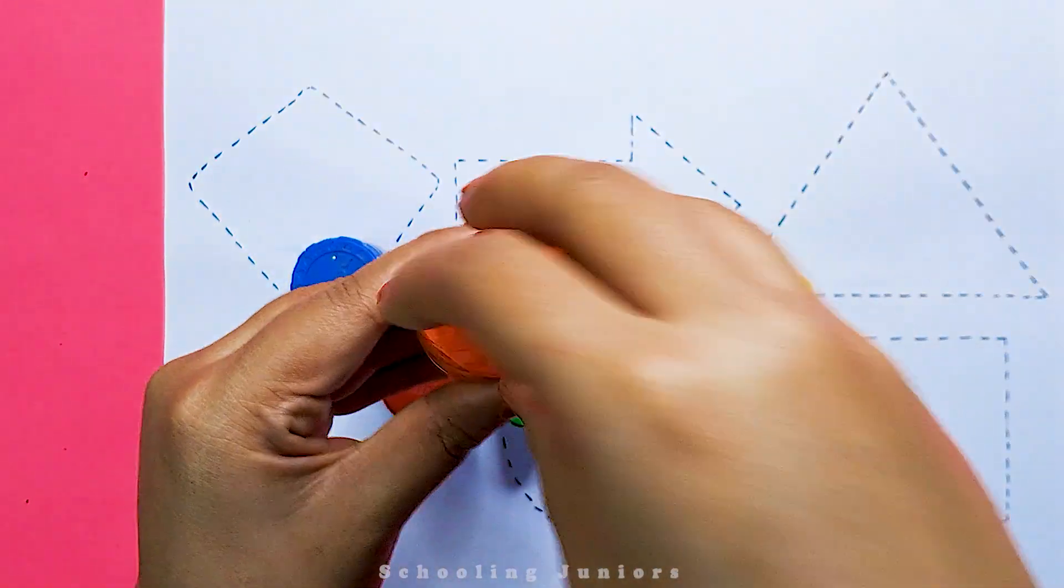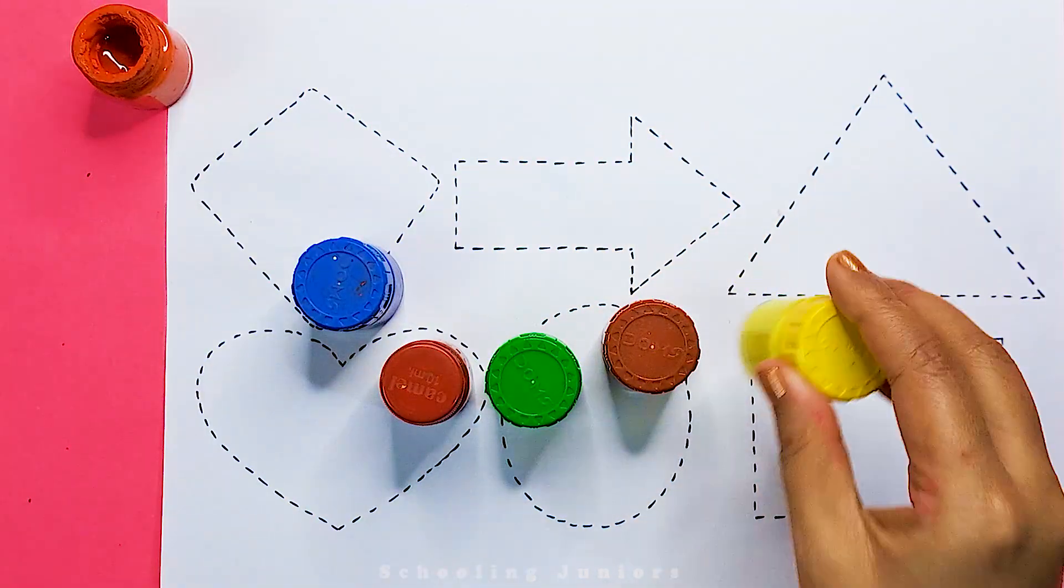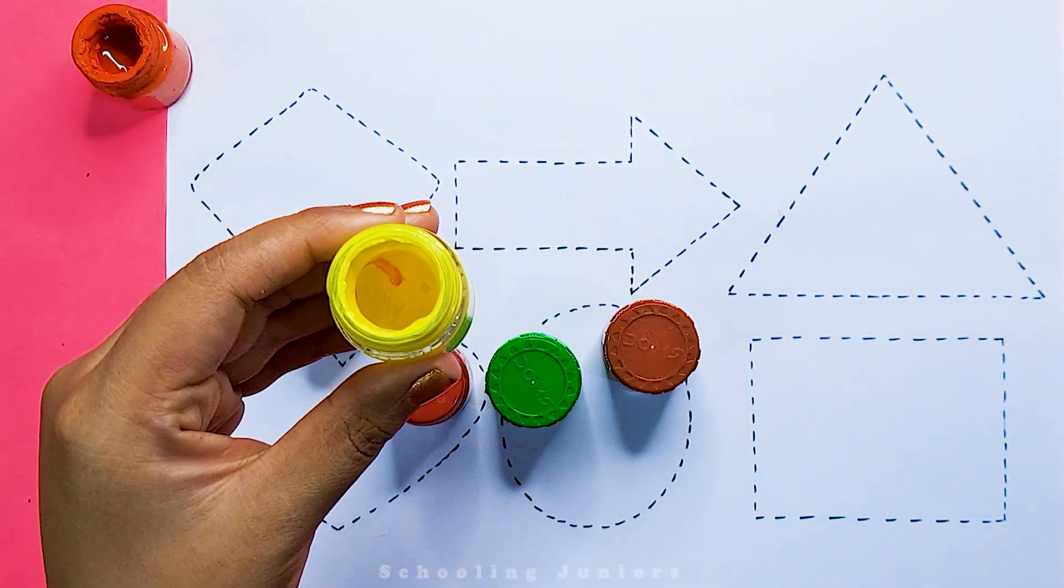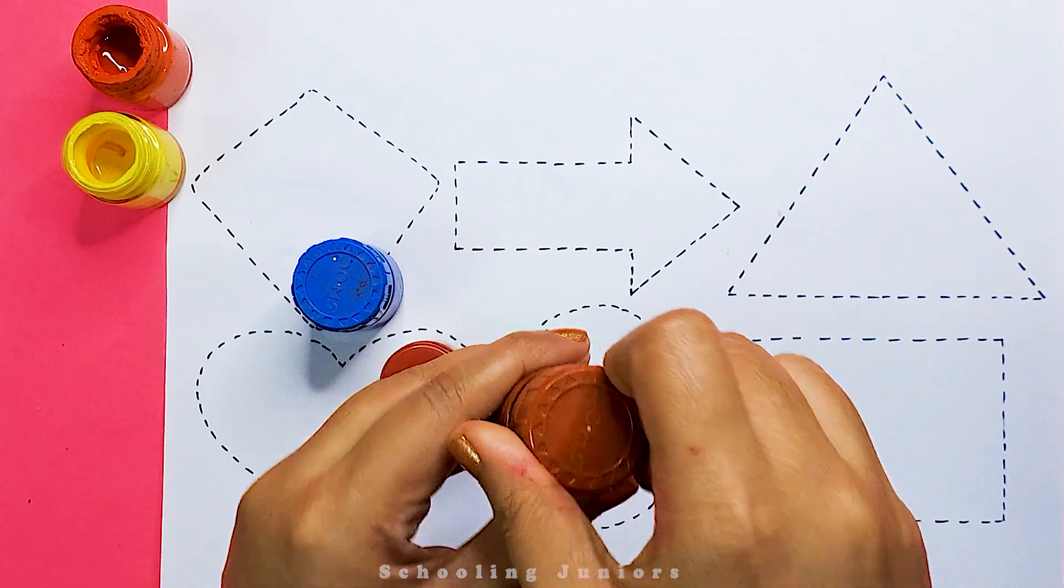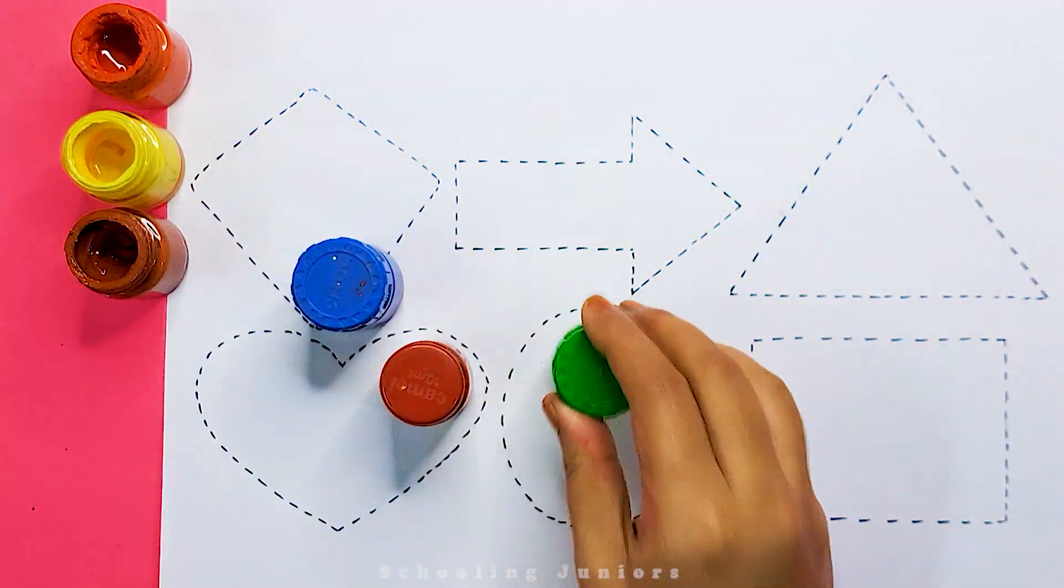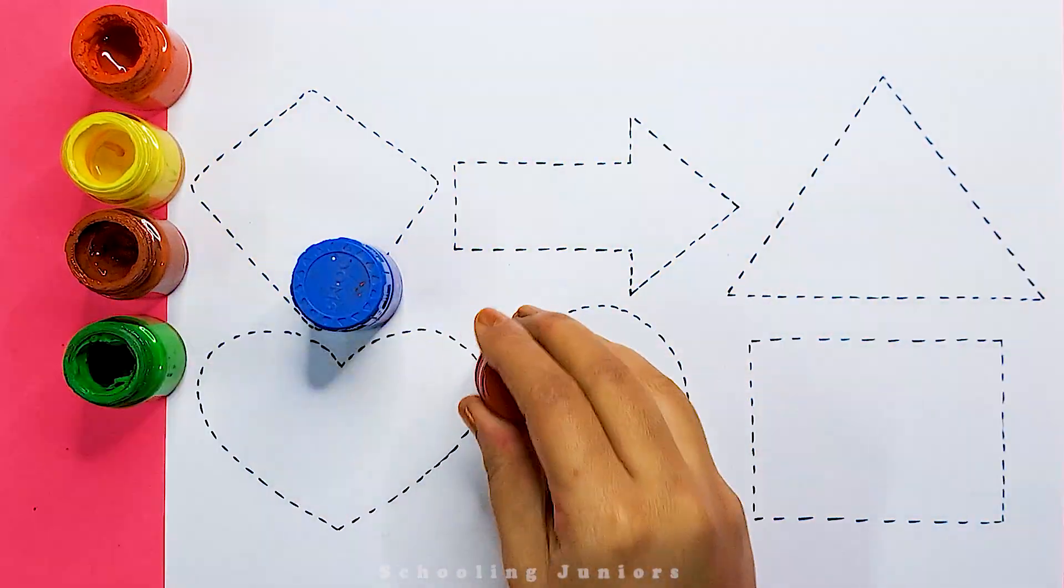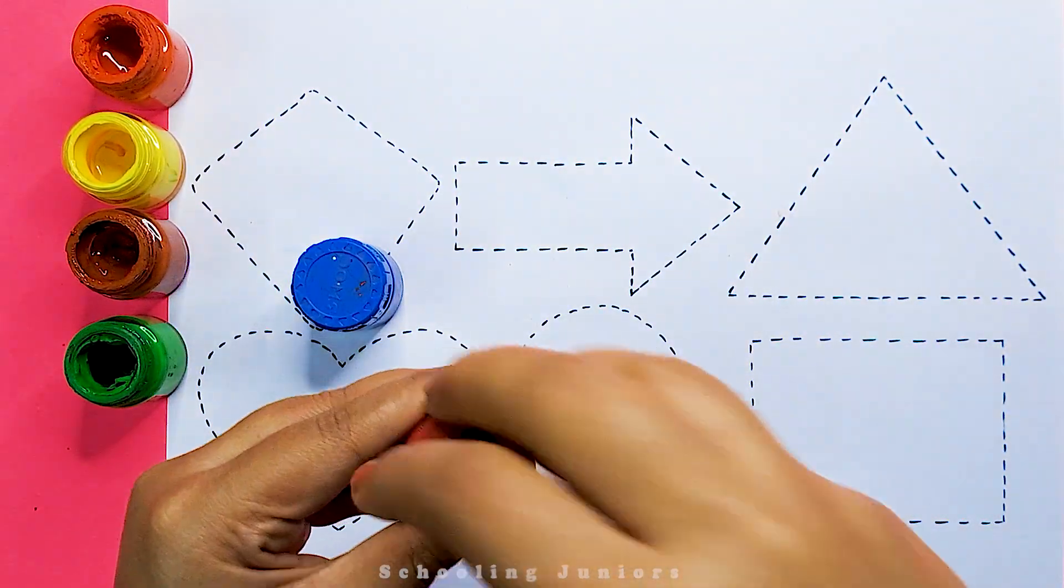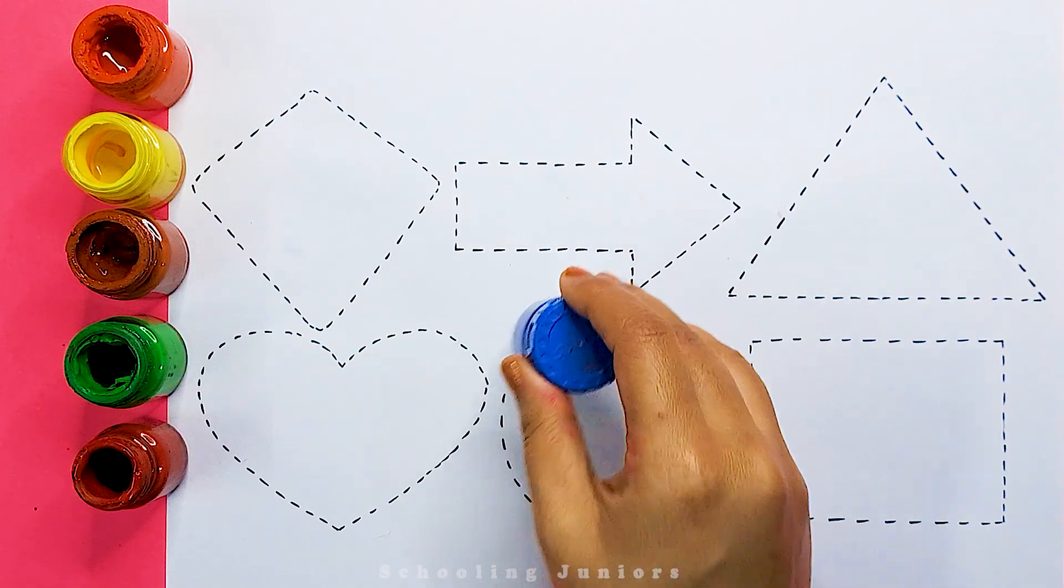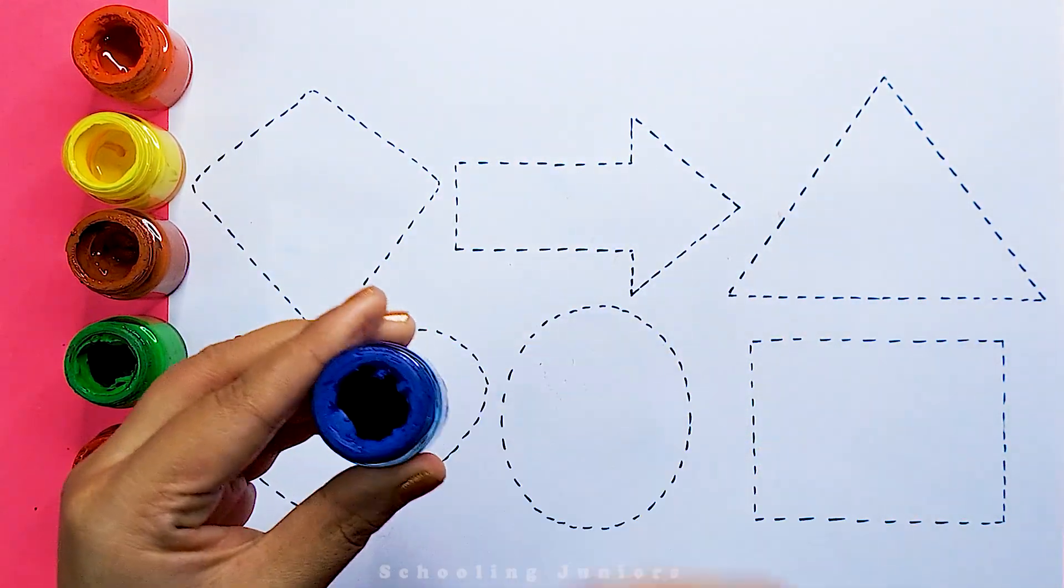This is orange color. This is yellow color. This is brown color. This is green color. This is red color. This is blue color.